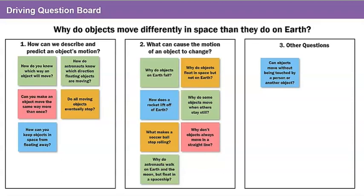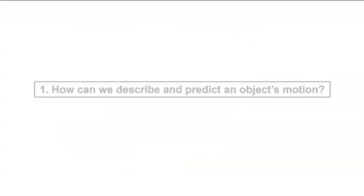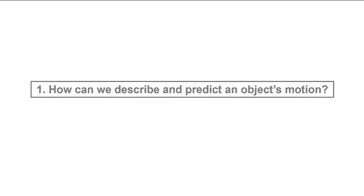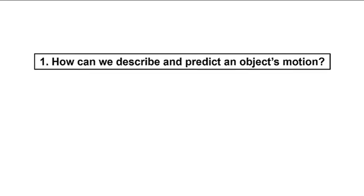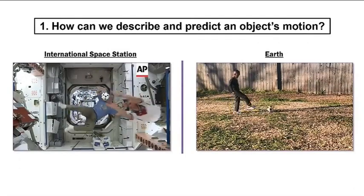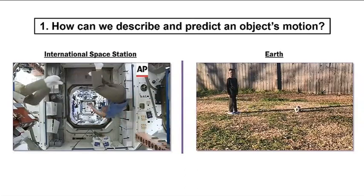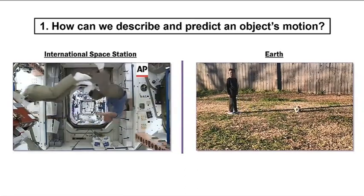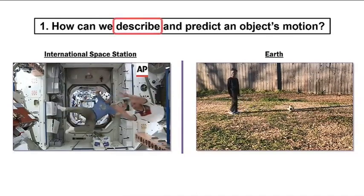Do you still have questions about motion on earth and in space? Your task after this lesson will be to pick one question you still have and sort it into one of these categories. How should we start investigating why objects move differently in space than they do on earth? Now that I think about it, we've already started investigating the first question: how can we describe and predict an object's motion? Remember, we watched people playing with soccer balls both on the international space station and on earth, and we described the motion of both soccer balls in our anchor model.